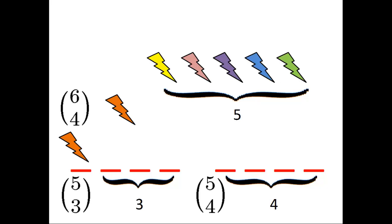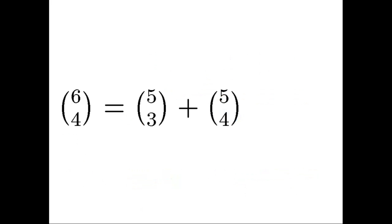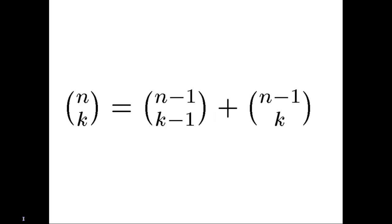By the rule of sum, six choose four equals five choose three plus five choose four. And in general, n choose k equals n minus one choose k minus one plus n minus one choose k.